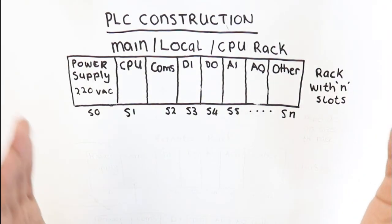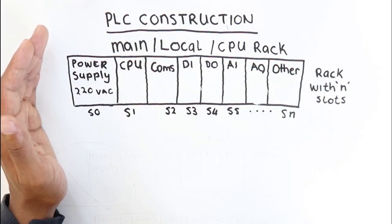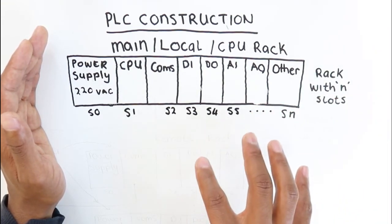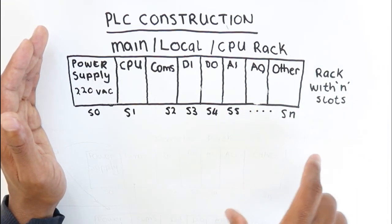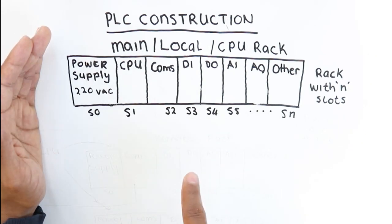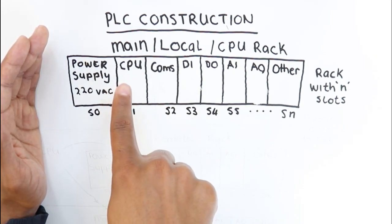Also, if you have IO that is located very far away from where you have your main rack, you'll also want to have a remote rack in that area that collects information from the IO in that area. And then the PLC remote rack will then transfer those signals to the CPU.